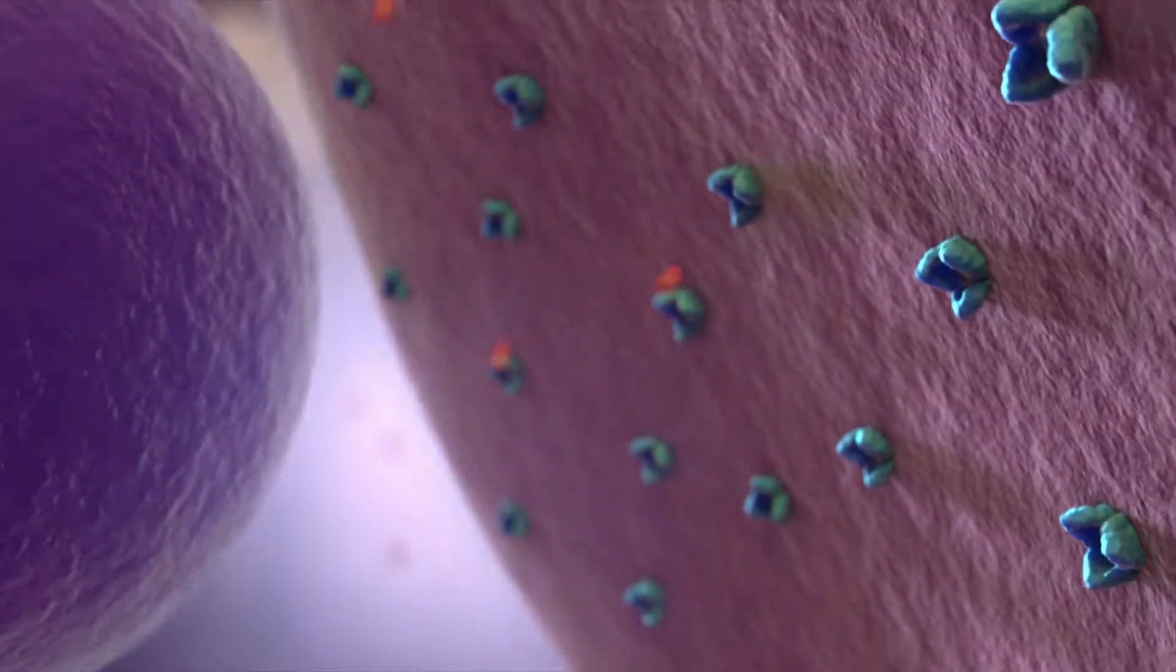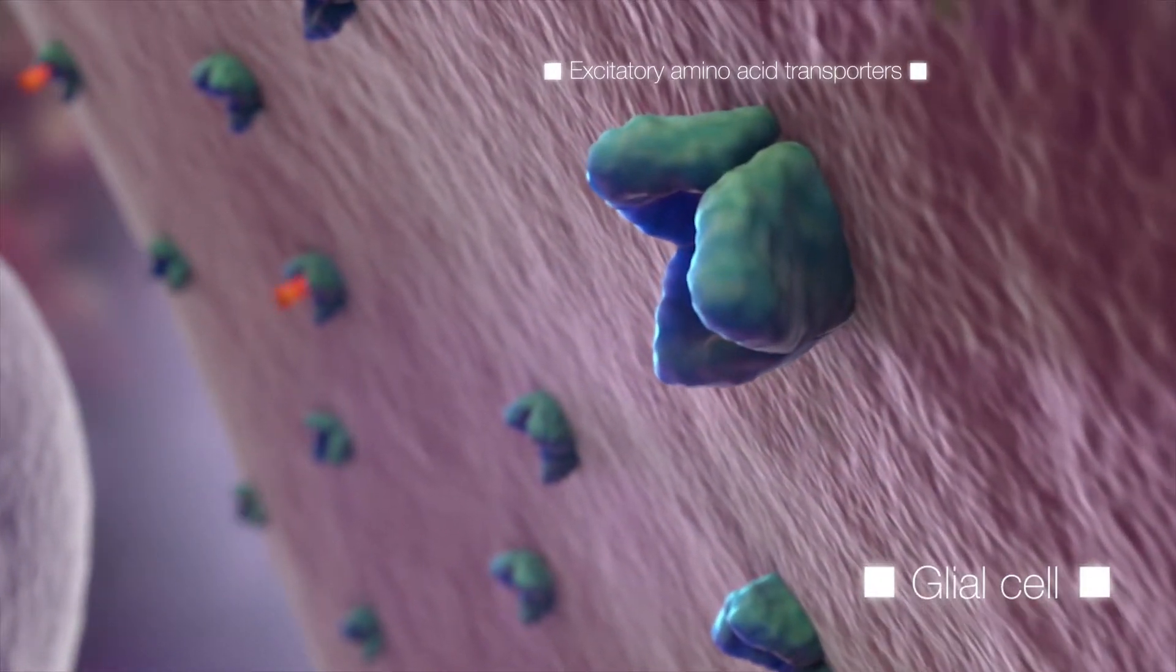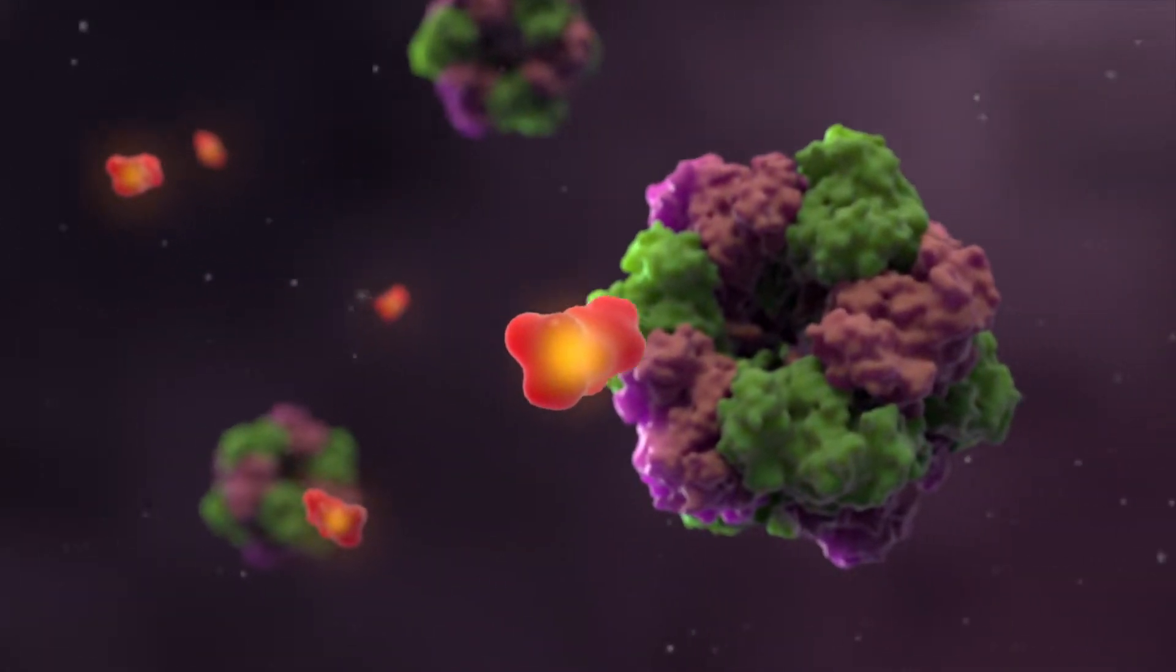After its release, glutamate is cleared from the extracellular space through excitatory amino acid transporters, or EAATs, which are located primarily on the surface of glial cells.